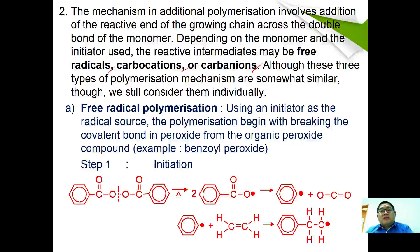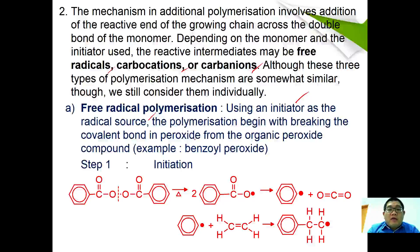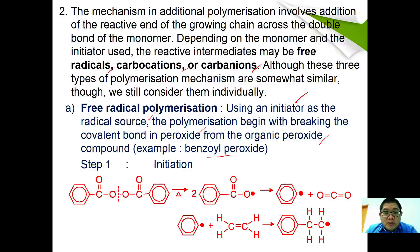The first type is free radical polymerization. Using an initiator that is a radical source, polymerization begins by breaking the covalent bond of an organic peroxide compound. Benzoyl peroxide is often used as the initiator. In the initiation step, ultraviolet light or heating forms a benzoyl radical, which eventually forms a phenyl radical.